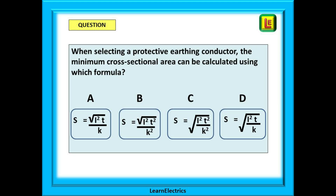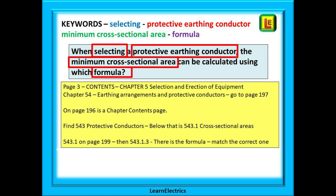Try another question now. When selecting a protective earthing conductor, the minimum cross-sectional area can be calculated using which formula? Here are the four choices — only one is correct. Look at the keywords here: selecting, protective earthing conductor, minimum cross-sectional area, formula. Now go to page 3, the main contents.